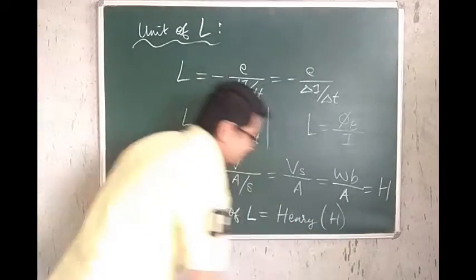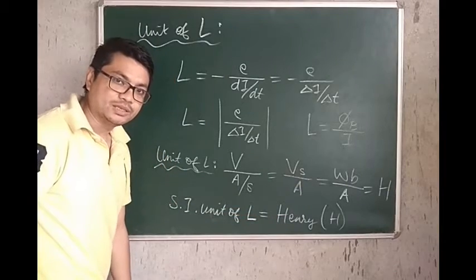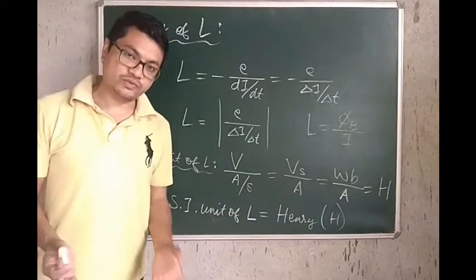Which is, of course, denoted by a capital H. And Henry is volt second per ampere. Alright? So, this is the unit of self-inductance.